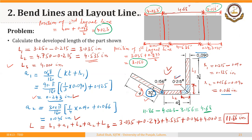So these are the calculations related to the position of the layout lines. From the right side, the first layout line will be at a distance of 3.156 inches. From the left, the position of the second layout line will be 4.023 inches. And the distance between the two layout lines is approximately 4.681 inches.